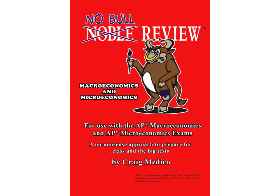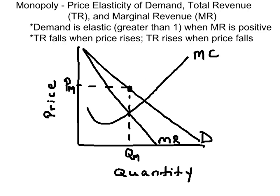Welcome to another Noble Review Session for students of AP Microeconomics. Today we're going to focus on the monopolist's demand curve and marginal revenue curve. This graph is showing an unregulated monopolist that is producing at a level of output where it would maximize its economic profit. That's because the marginal revenue is equal to its marginal cost. The price is on the demand curve.